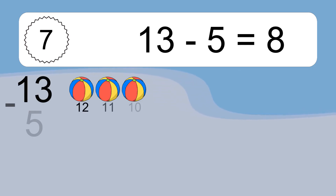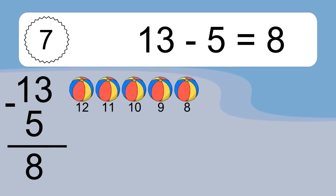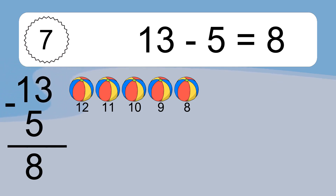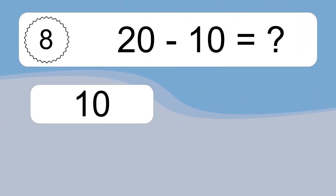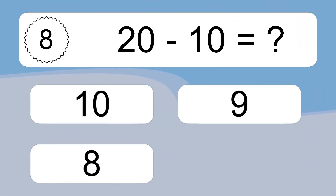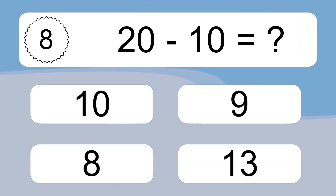13 minus 5 equals what? 13 minus 5 equals 8. Let's count it: 12, 11, 10, 9, 8.